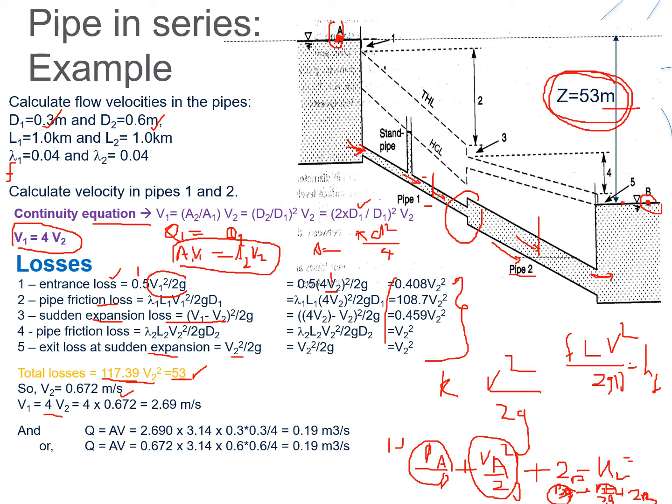Once we know V2 = 0.672 m/s, we calculate V1 = 4 × 0.672 = 2.69 m/s. The discharge is Q = A·V, and using either pipe both give the same value: Q = 0.19 m³/s.